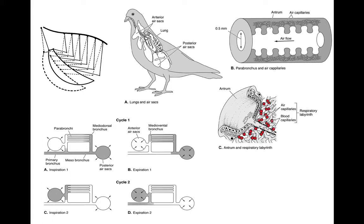Then we have birds, which are kind of the pinnacle of weird lung evolution in vertebrates. They have a thoracic hinge so they can really expand their thoracic cavity and get lots of intercostal suction pumping going. What they have is a series of air sacs — these are not lungs. The lungs are in little tubes called the parabronchi, which are dorsally located.